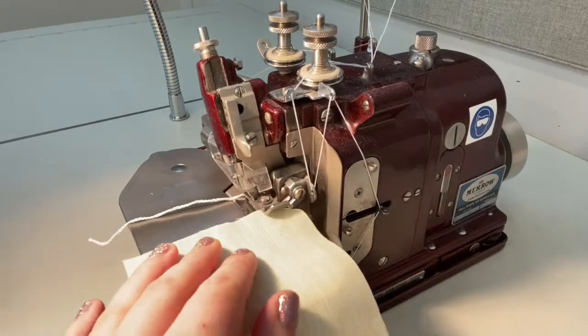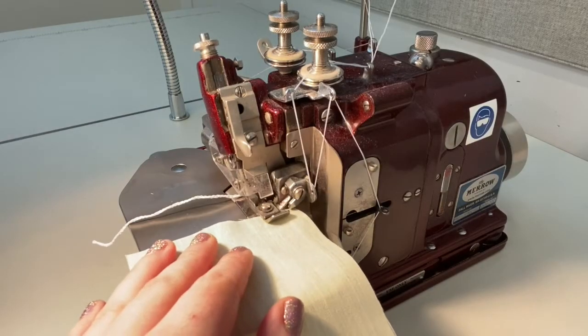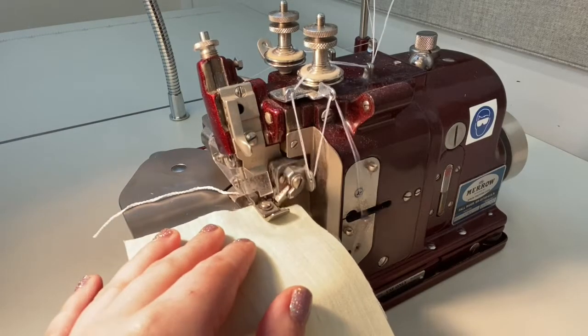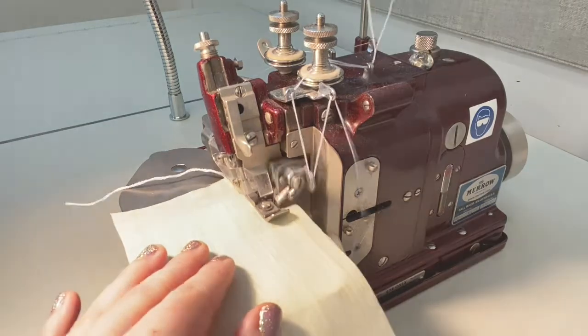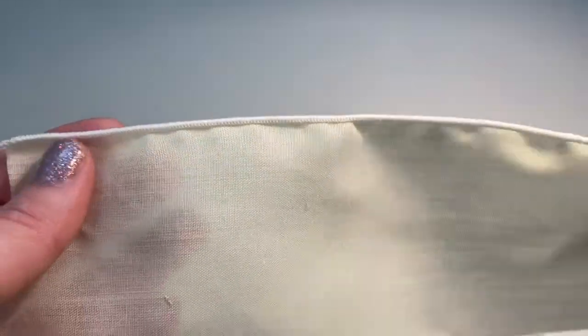The machine creates a narrow rolled hem that is bound securely with the looper threads to secure all raw edges. Like an overlock machine, it trims away all excess fabric beyond the stitch width.